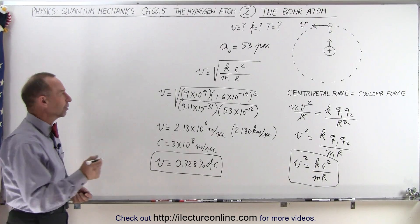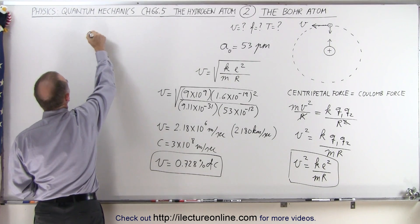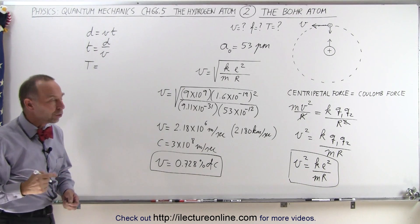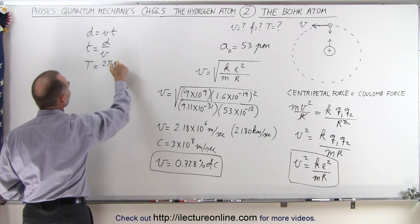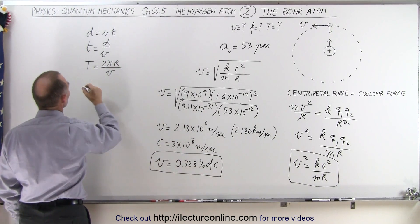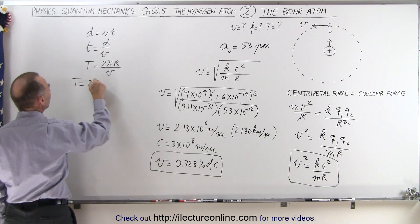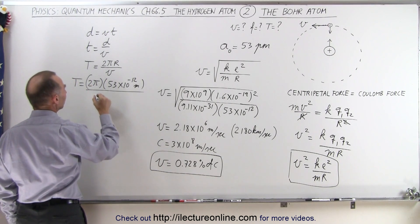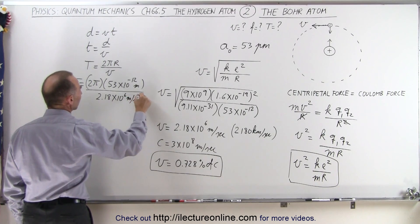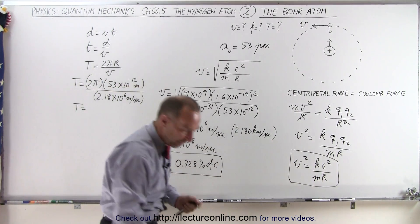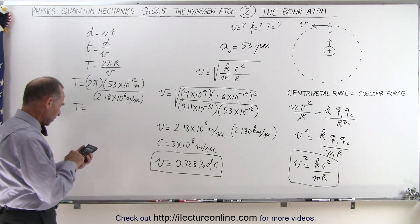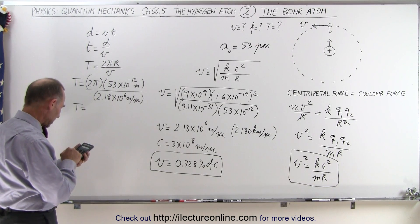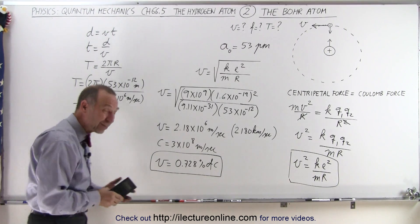Now, based upon that, can we find the period — the time it takes to go around the nucleus once? We know that distance is equal to velocity times time, which means that time is equal to distance divided by velocity. Therefore the period for one trip around the nucleus is going to be the distance around the nucleus, which is 2 pi r, divided by the velocity. We found the velocity and we know the radius, so the period T is equal to 2 pi times the radius of 53 times 10 to the minus 12 meters, divided by the speed of 2.18 times 10 to the 6th meters per second, and that gives us a period of 1.52 times 10 to the minus 16 seconds.